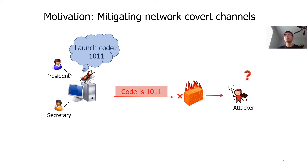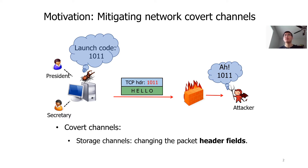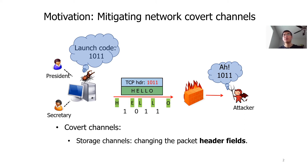An alternative way is to send a normal TCP packet with the launch code encoded in the packet header field. The firewall which only inspects packet payloads will not find it. This is called the covert storage channel, which leaks secrets by changing packet header fields. The attacker could also leak data by manipulating the timing of the packets — for instance, using large gaps to encode 1 and using small gaps to encode 0. This is called the covert timing channel, which leaks secrets by changing the packet timing.